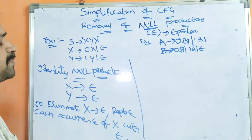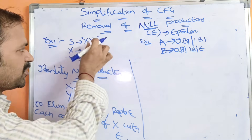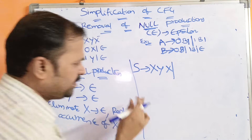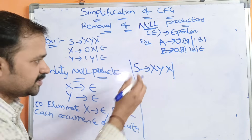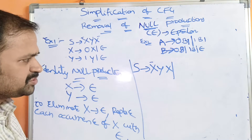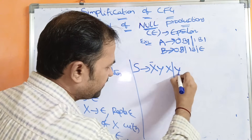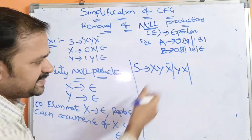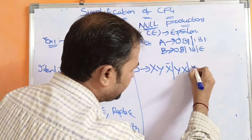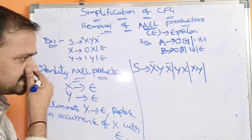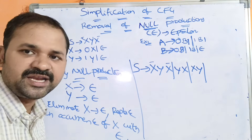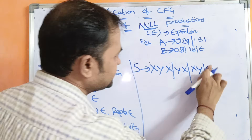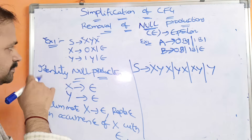The first production is S implies XYX. We write it as-is, then substitute epsilon for X. Replacing the first X with epsilon gives epsilon·YX, which is YX. Replacing the second X with epsilon gives XY·epsilon, which is XY. Replacing both X's with epsilon gives epsilon·Y·epsilon, which is just Y. So S produces XYX, or YX, or XY, or Y.